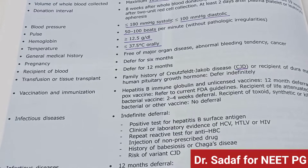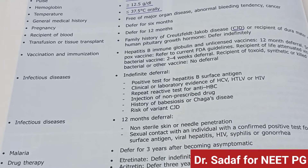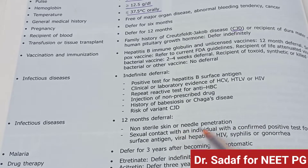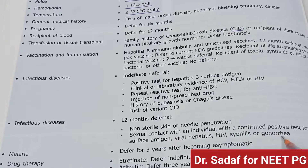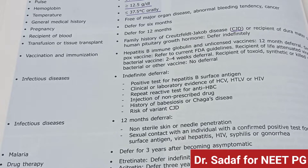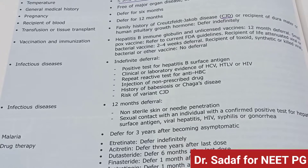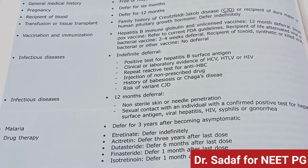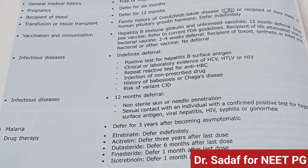Infectious disease 12-month deferral applies to: non-sterile skin or needle penetration, sexual contact with an individual who has a confirmed positive test for hepatitis B surface antigen, viral hepatitis, HIV, syphilis, and gonorrhea.